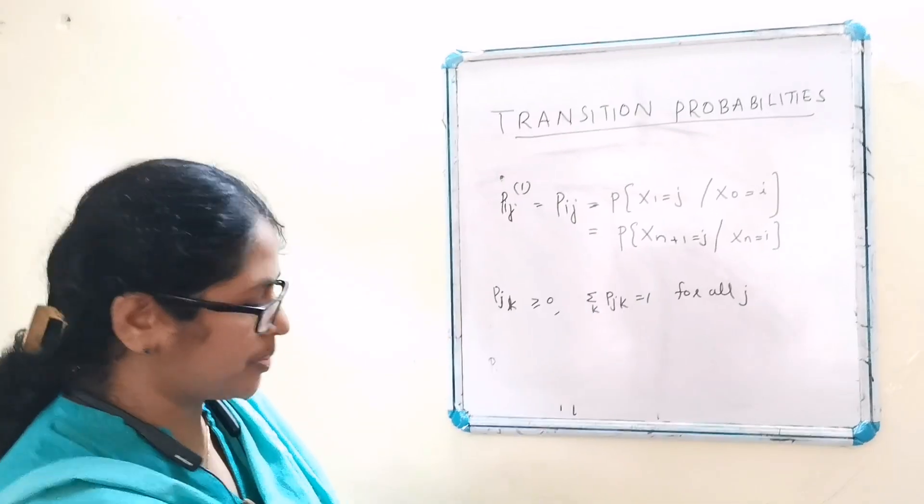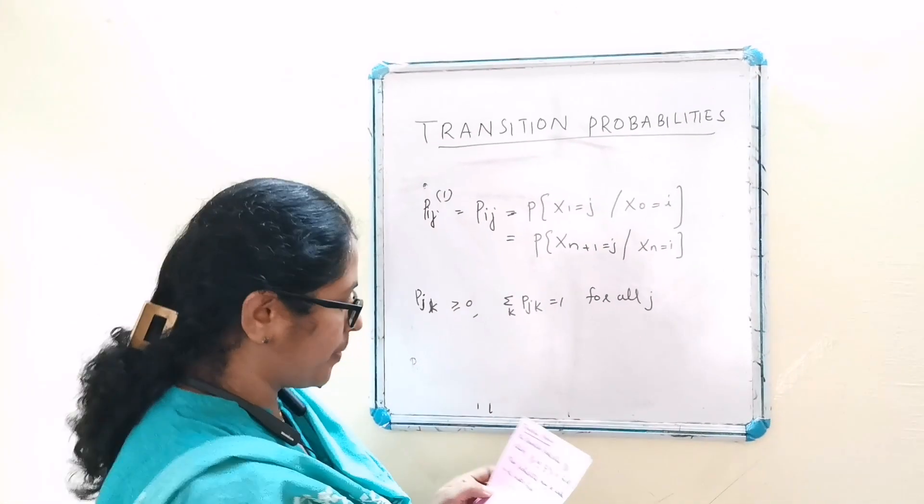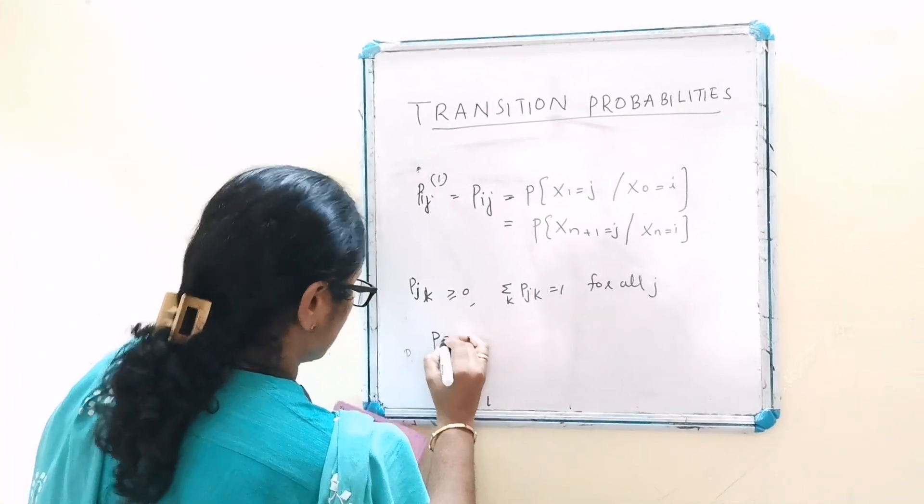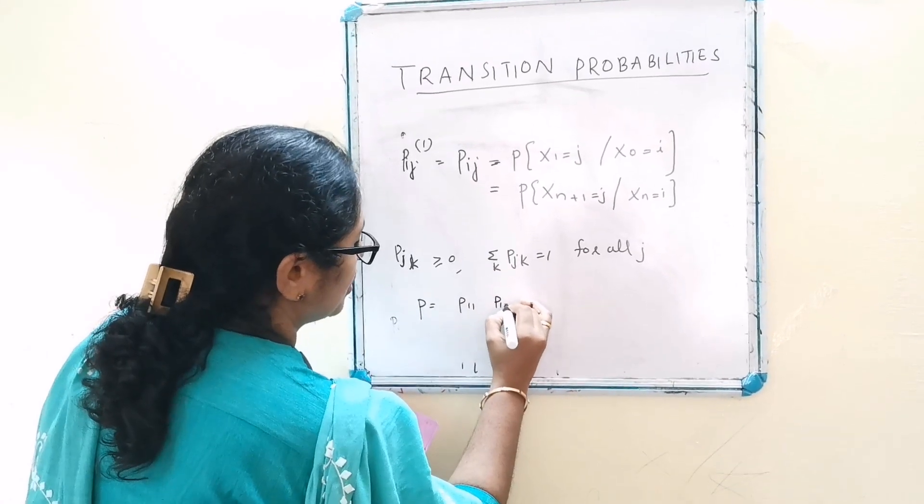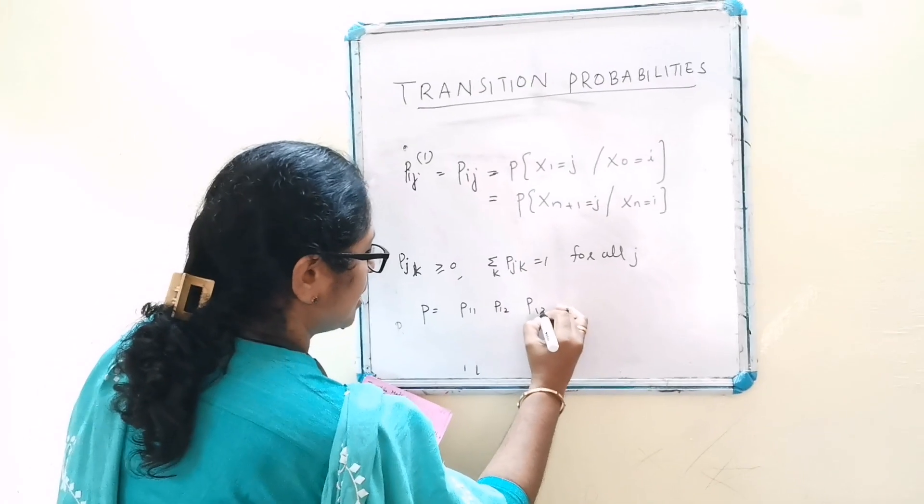These probabilities may be written in matrix form: P is equal to p11, p12, p13, et cetera.